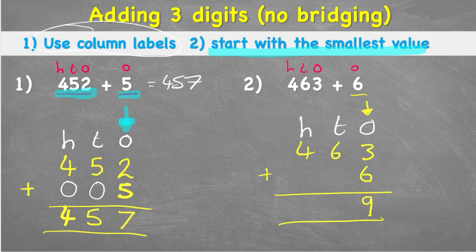Now in the 10s column, I have this 6 add a 0. There's nothing in the other row. 6 add 0 is of course 6. And again, my 100s column, 4 add 0, leaves me with 4. So my answer to 463 plus 6 equals 469.